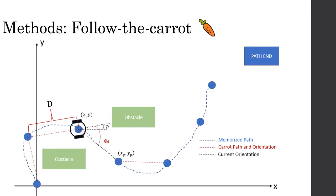One of the simplest methods is follow the carrot. In this method, the robot follows carrot points x sub g, y sub g coordinates from the recorded path by aligning its orientation to point towards the carrot point. The robot follows the carrot by making the difference between the desired angle orientation phi sub d and the robot's current orientation phi equal to zero.